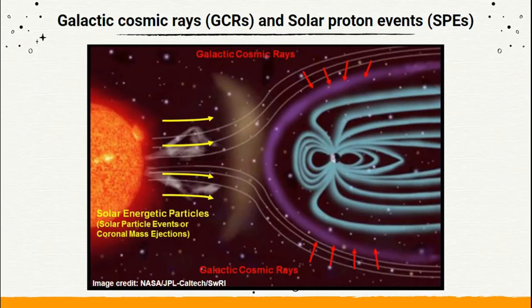Radiation is the factor that can significantly alter the habitability of a planet. Radiations like galactic cosmic rays originate from sources located generally in a galaxy, but outside the solar system.